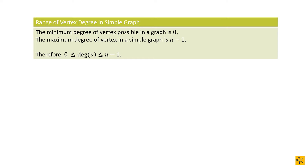Let's look at some of the properties of simple graphs. For simple graphs, because there is a boundary in that they can't have multiple edges, it means they can have at most one edge between every pair of vertices. Remember, a simple graph can't have loops and it can't have multiple edges, and that gives us some kind of boundary which means we can have a range for the vertex degrees of a simple graph.